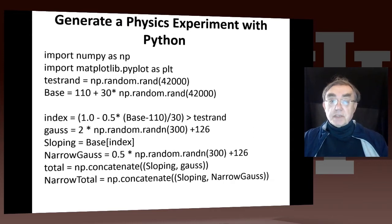So here we have our first Python, which is simulating what an experiment might see. We have to use numpy. We want to have matplotlib to plot it. We need some random numbers. We're generating a random number between 110 and 140. That's this thing here. My base starts with 110, that's 30 times the default random number, which is uniform between 0 and 1.